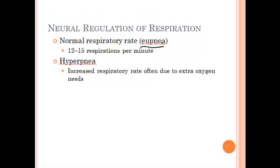Whenever you start exercising, your rate is going to increase because your cells are going to need more oxygen as they're trying to work harder. Your respiratory rate will increase, and we call this hyperpnea. When we exercise, the rate of breathing may not increase but just the amount of oxygen we're trying to pull in may increase. Your diaphragm and muscles are going to try to increase the volume so that you're getting more air in and out.